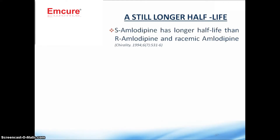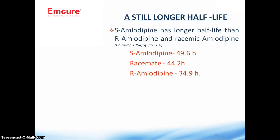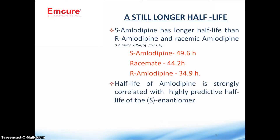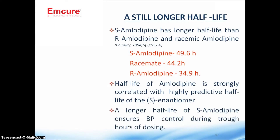S-amlodipine has a still longer half-life. S-amlodipine has a half-life of 49.6 hours, racemic amlodipine has 44.2 hours, and R-amlodipine has 34.9 hours. The trend clearly favors S-amlodipine with the maximum half-life. This longer half-life is strongly correlated with the half-life of the S-enantiomer and will ensure blood pressure control even during the trough hours of dosing.